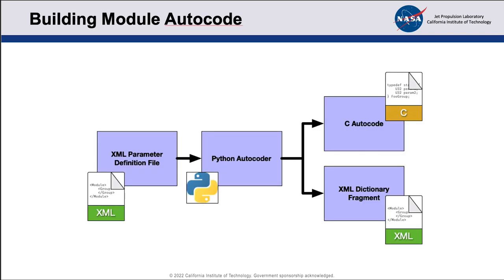Developers define parameters in XML — there's an XML parameter definition file that follows a schema, which gets fed into an autocoder written in Python. The Python autocoder then outputs C code as well as a dictionary fragment, which is the module's contribution to the overall flight software dictionary. In a later stage of the build operation, those fragments get merged together to create the overall flight software parameter dictionary.